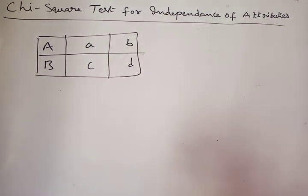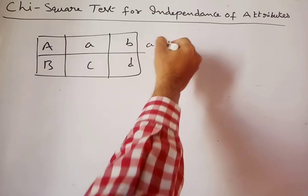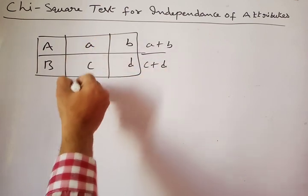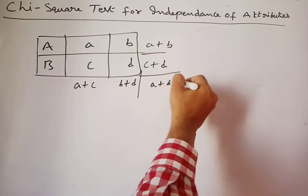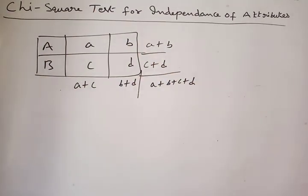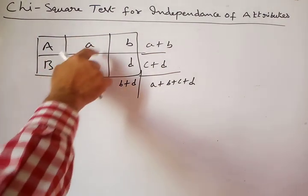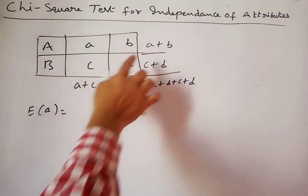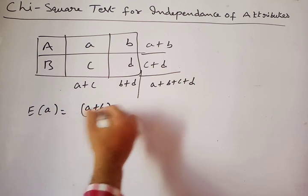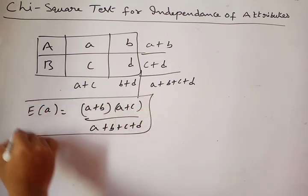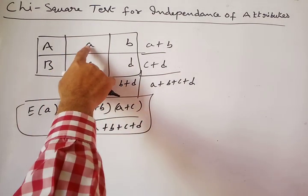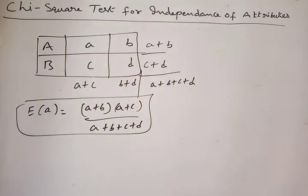To calculate expected frequencies: the row total here is (a+b) and the other row total is (c+d). The column totals are (a+c) and (b+d), and the grand total N = a+b+c+d. To find the expected frequency of cell a: E(a) = (row total × column total) / grand total. You need to calculate the expected frequency for each observed frequency.